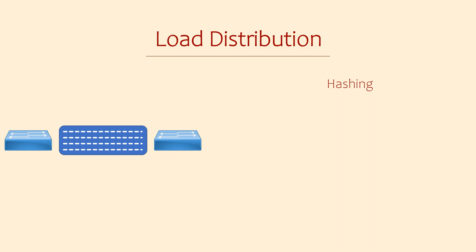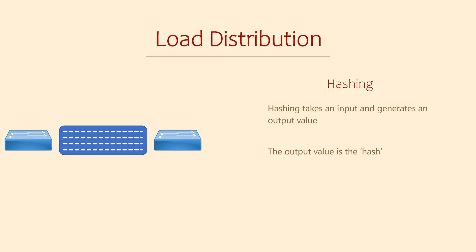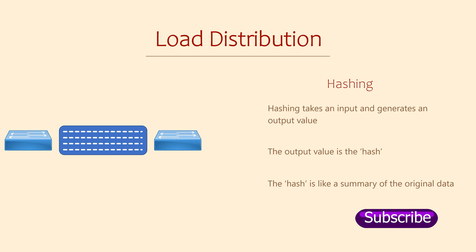Hashing is used for a lot of things in the IT world. We'll see it again when we talk about security later in the series. A hashing algorithm takes any input and generates a fixed value as an output. The output it generates is a bit like a signature, and that signature represents the original data. You can think of it like you're in a library — books are organised by category and given a number, and using that number you can find the book.